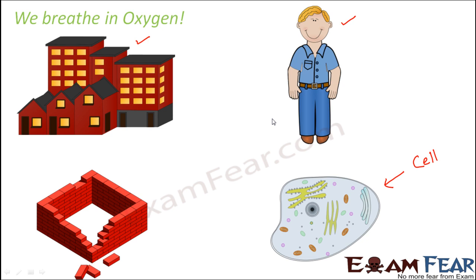Since each of those cells are doing some work, they need some energy. So how do the cells get energy? The cells get energy from the food which we eat. We eat food from our mouth, the food goes inside our stomach, and the food is then broken down, digested, and absorbed by the body — actually absorbed by the cells of the body. And then each of these cells will convert the food into energy.